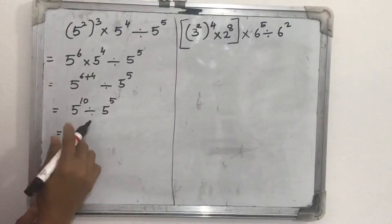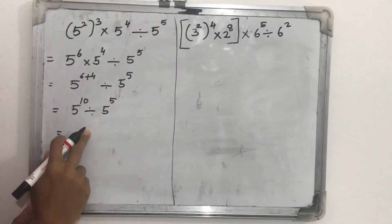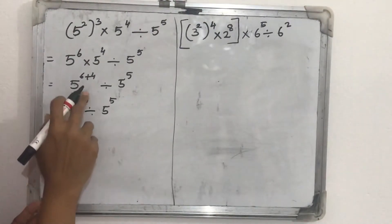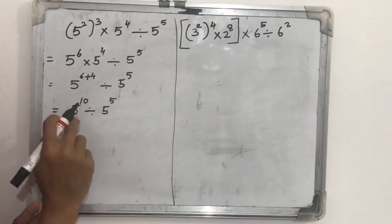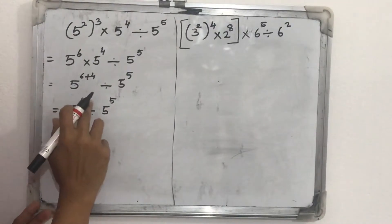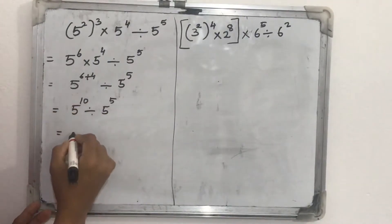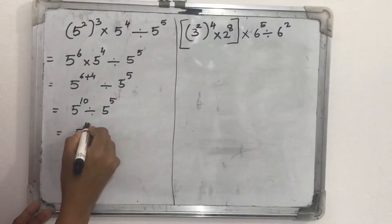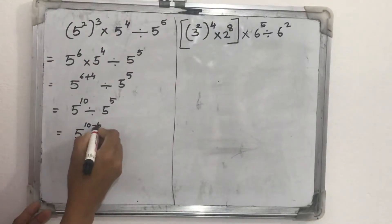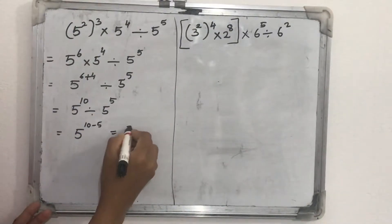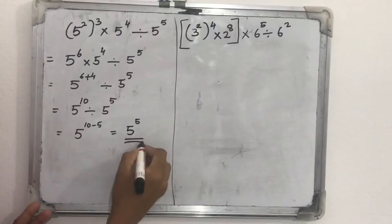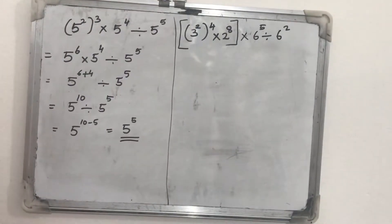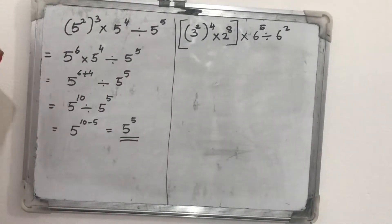Again we can use another law. The law is: x raised to a, divided by x raised to b, equals x raised to a minus b. So five raised to ten divided by five raised to five gives five raised to ten minus five, which equals five raised to five. For simplification, we write the answer as five raised to five.